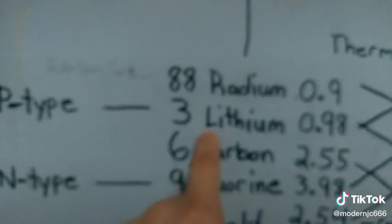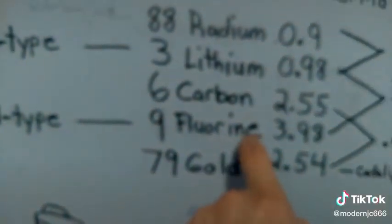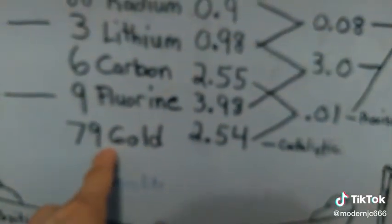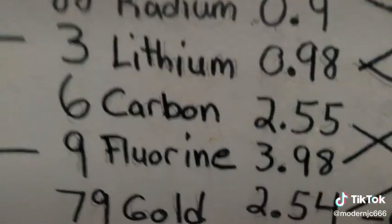Let's say it's a thermoelectric transistor or capacitor made of P-type lithium, N-type fluorine or fluorite material, and used gold for the conductance and catalytic effect, radium for the nuclear energy, and carbon for insulation.